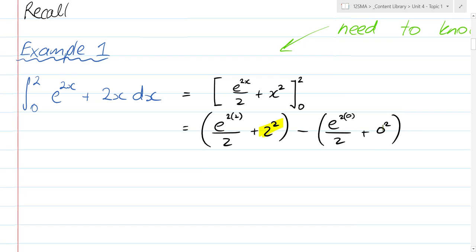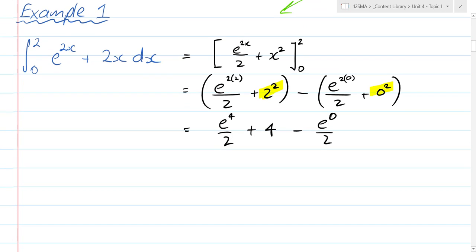Now, you might recall hopefully from methods that if you've got a polynomial like this term, when you substitute 0 it will disappear, but that's only for polynomials. So be really careful with that exponential, it doesn't just disappear. 0 is an important boundary, so I get e^4/2 + 4 - e^0/2. And e^0 is 1, so it's minus a half.